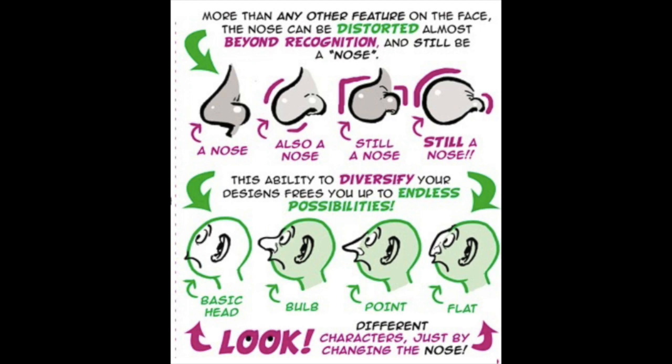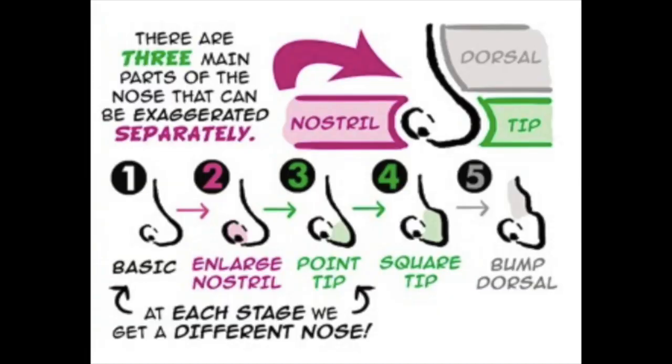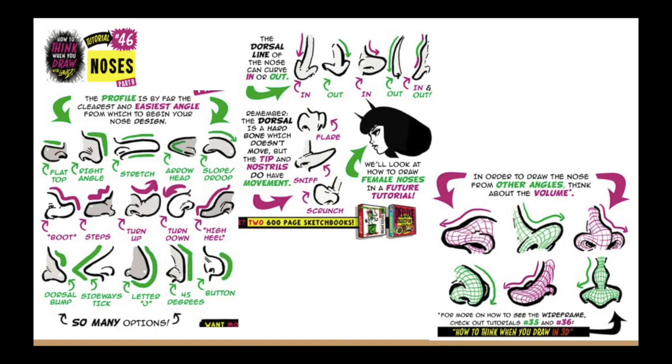This is fun because then you can have endless possibilities. Here we see a basic head and just changing the nose makes the heads all seem like they're different characters. The Etherington's point out that there are three parts of the nose that you can switch up: the dorsal or bridge part, the tip, and the nostril. So you can change each one up and make a completely different nose. Here are more variations on noses, showing different parts being altered.